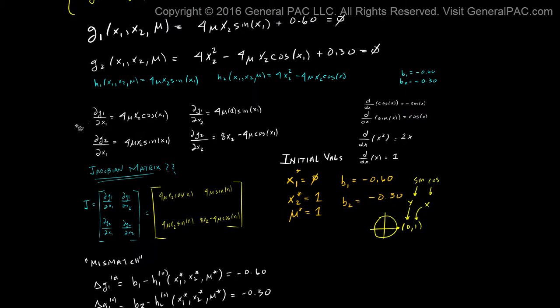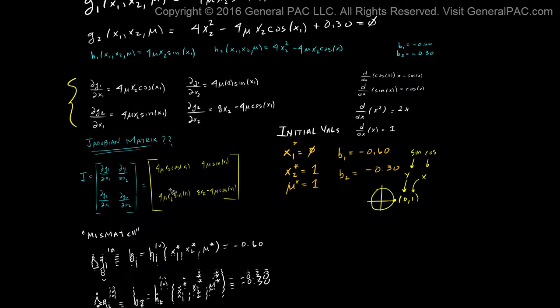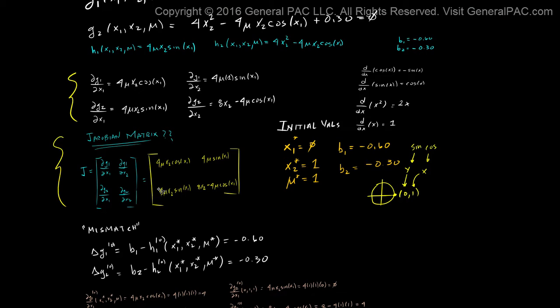We took the partial derivative of these equations with respect to x1 and x2. We determined the Jacobian matrix and the Jacobian matrix is simply a matrix of the partial derivatives.